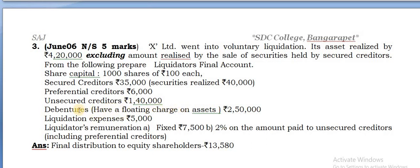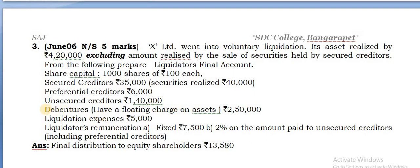And debentures - this problem has debentures given. Debentures always have a floating charge on all the assets - that is an indication. If you have a loan on a particular one asset, that gives legal rights, charges. But debentures will have a floating charge on all the assets.